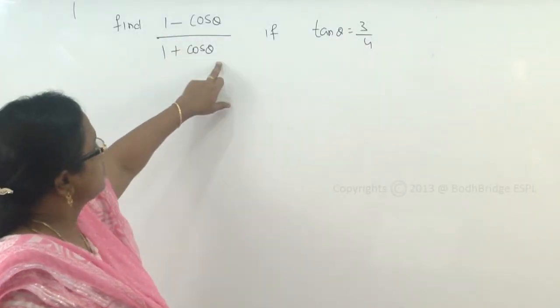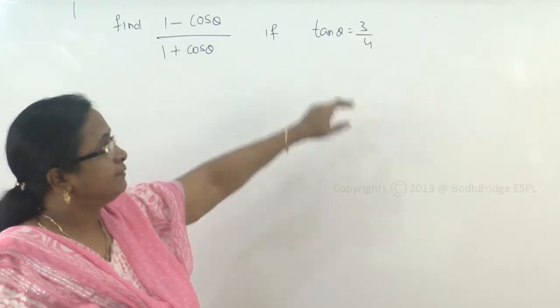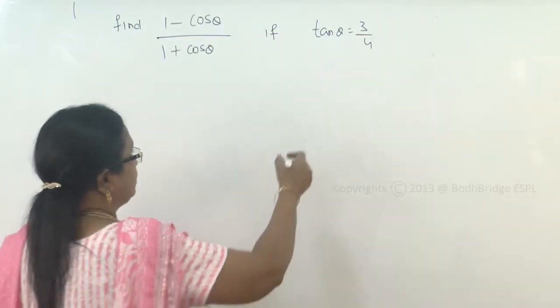Find 1 minus cos theta by 1 plus cos theta if tan theta is given as 3 by 4. So, tan theta is given as 3 by 4.